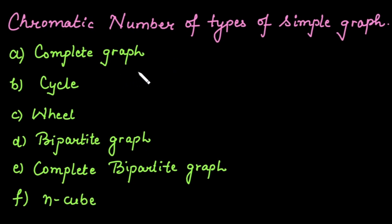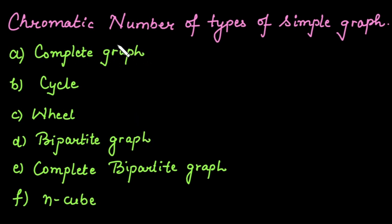In this video we are going to learn about the chromatic number of different types of simple graph. Specifically we will determine the chromatic number for six types of simple graph. The chromatic number of a graph is the minimum number of colors needed to color its vertices such that no two adjacent vertices share the same color.